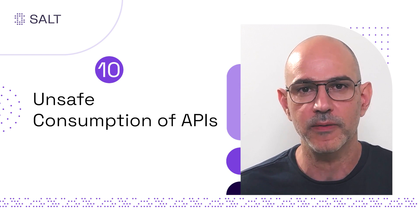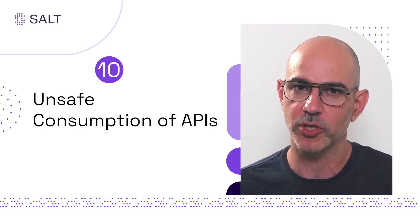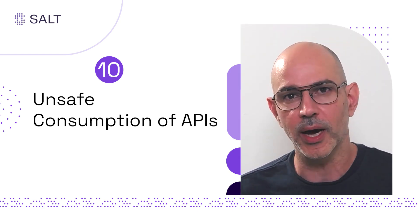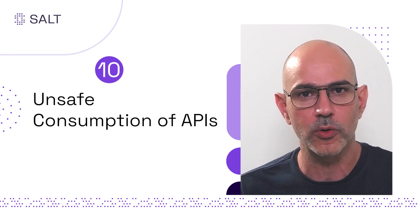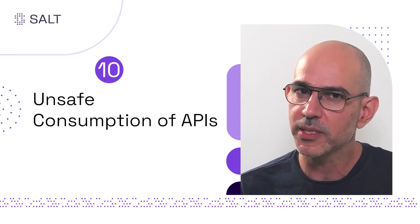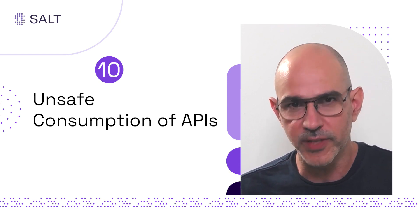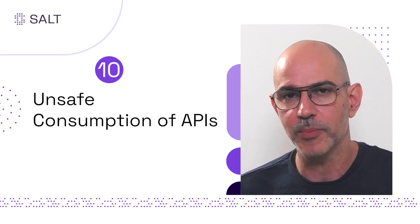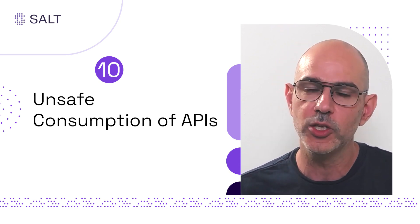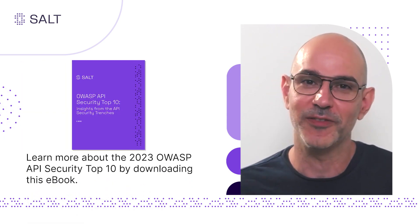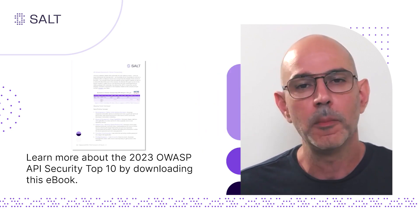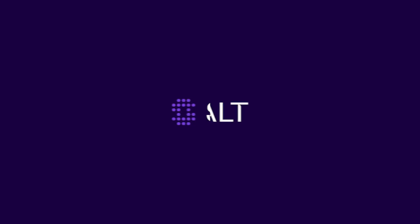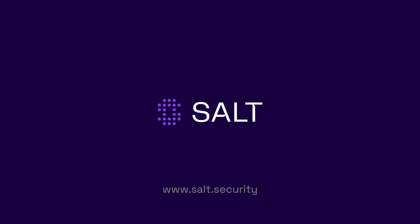OWASP API 10 is unsafe consumption of APIs. If your API interacts with a third-party API that is completely out of your control, trusting it is the wrong thing to do — because if that third-party API gets compromised, you will have an API 10 condition. Thank you for watching this video. If you want to learn more about the OWASP API Top 10, please go ahead and download our ebook.